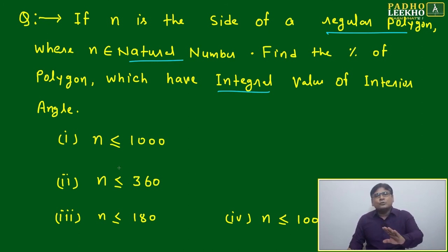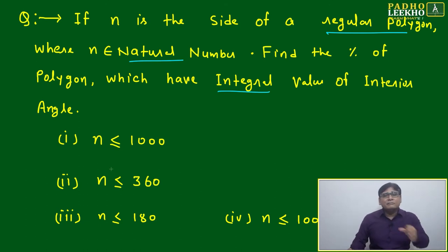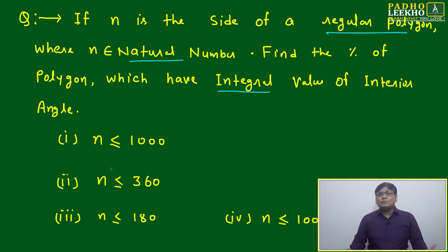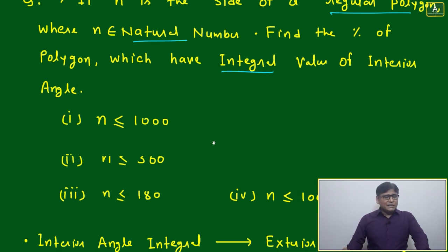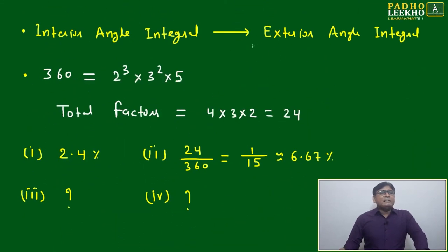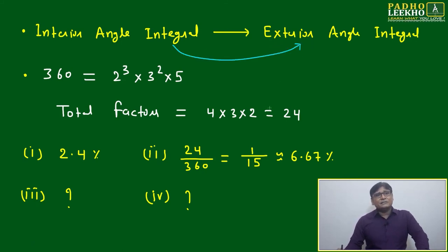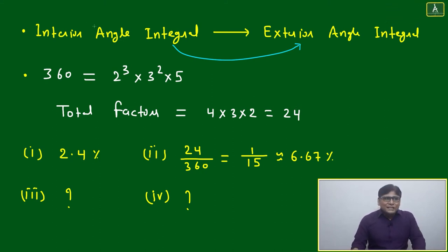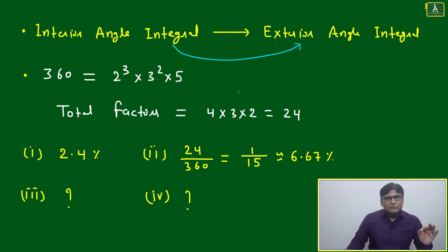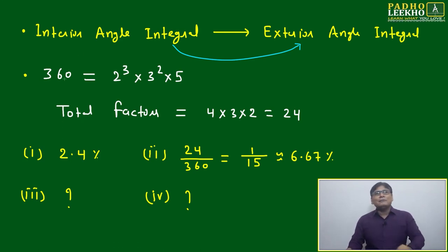In aptitude-based tests, nobody checks your method — if you mark option B and it's correct, you get full marks. The beauty here is the key insight: if the interior angle is integral, then the exterior angle must also be integral. If you apply this logic immediately, the problem becomes easy. As you work on interior angles, they keep changing, but the sum of exterior angles is always 360.